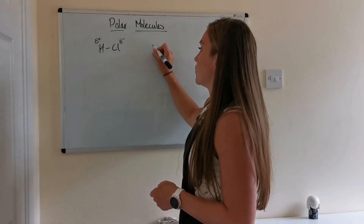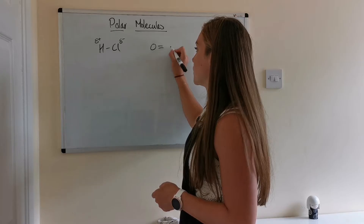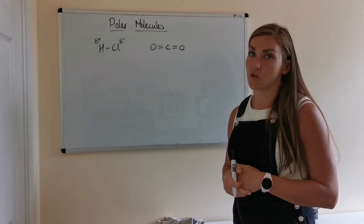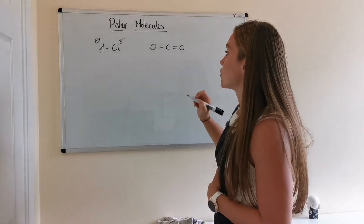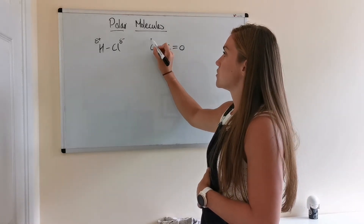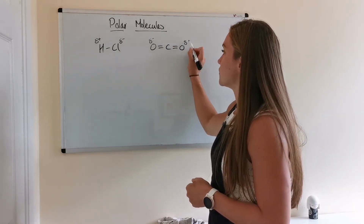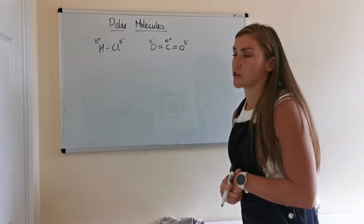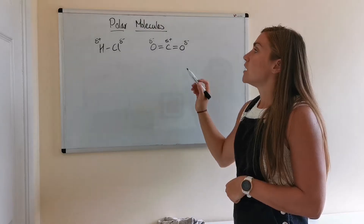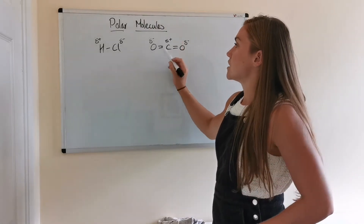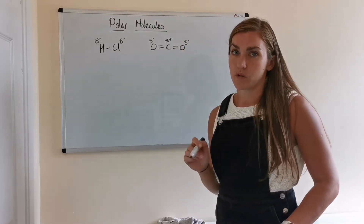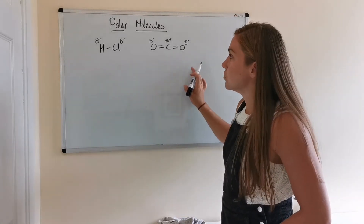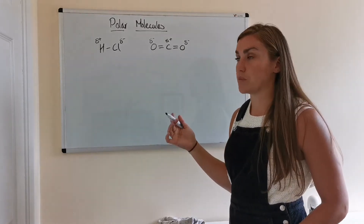If we take an example of carbon dioxide — remember, carbon dioxide has got the double bonds between the oxygen and the carbon. Oxygen is more electronegative than carbon, so the oxygens will hold a partially negative charge and the carbon ends up as partially positive. This molecule does have polar bonds in it — polar covalent bonds. However, as a molecule, is it polar or non-polar?